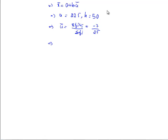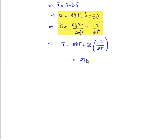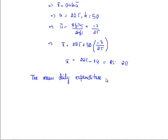Substituting all values in the formula, we get 225 plus 50 into minus 7 by 25, that is 225 minus 14, which equals 211 rupees. Hence the mean daily expenditure on food is 211 rupees.